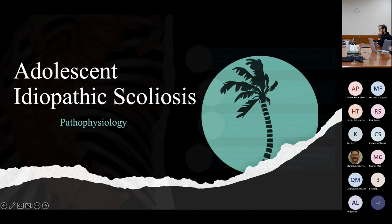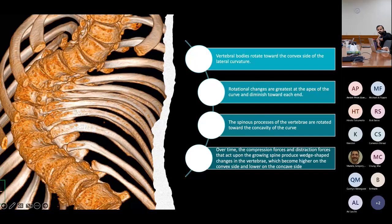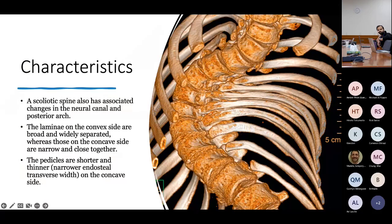Regarding pathophysiology: scoliotic spines develop differently and have different anatomy within the vertebral bodies, pedicles, and lamina. The vertebral bodies rotate toward the convex side, with the greatest rotational changes at the apex of the curve. The spinous processes rotate toward the concavity. Over time, compression and distraction forces act upon the growing spine, resulting in wedge-shaped vertebral changes — higher on the convex side and lower on the concave side — consistent with the Hueter-Volkmann law.